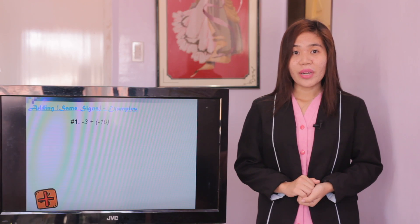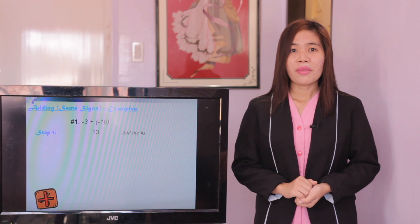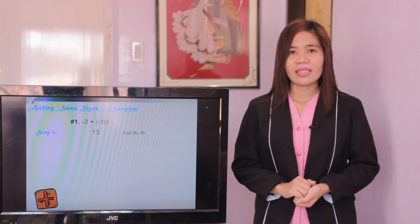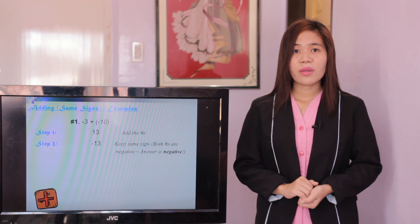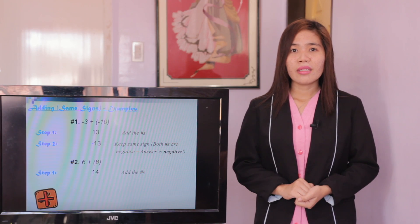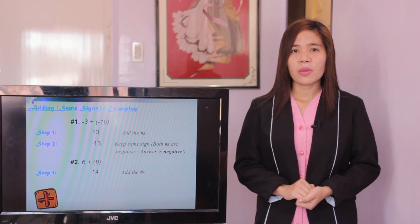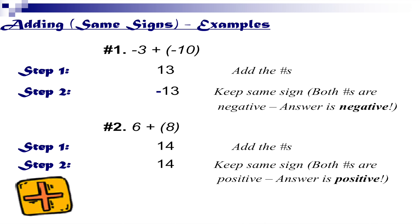Example number 1: negative 3 plus negative 10. Step 1, add the numbers — 3 plus 10 equals 13. Step 2, keep the same sign. Both numbers are negative, so the answer is negative 13. Example number 2: positive 6 plus positive 8. Step 1, add the numbers — 6 and 8 equals 14. Step 2, keep the same sign. Both numbers are positive, so the answer is positive 14.